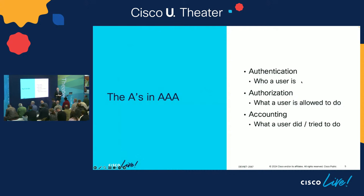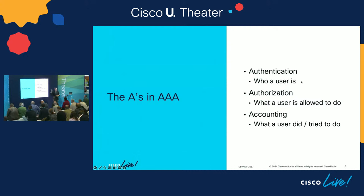That's also why some network engineers don't like to set up AAA — because it's so much easier to blame somebody else if we all just log in as admin. You're not being recorded, so feel free to answer honestly: who still logs into their production network as admin? Nobody's willing to admit it. I know there's somebody out there who hasn't set it up and came here today to learn how to actually set up RBAC.